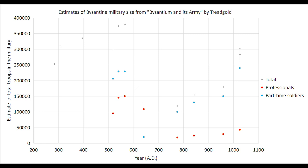So let's just start walking you through it. The first data point is in 285. You can see that Diocletian takes over and he starts out with just over 250,000 troops in the Eastern Empire. Over his 20-odd year reign, the number increases to about 315,000, which is to be expected. He's well known for having increased the size of the military, which was one of his tools for ending the crisis of the 3rd century.